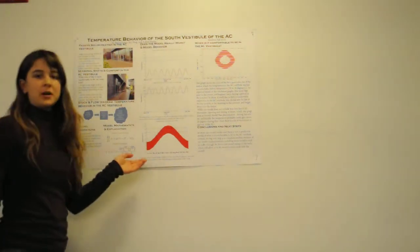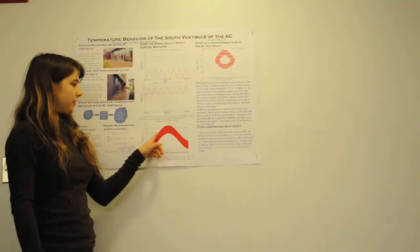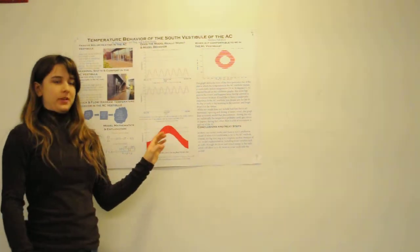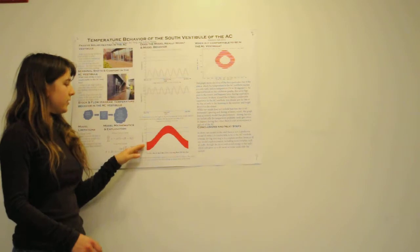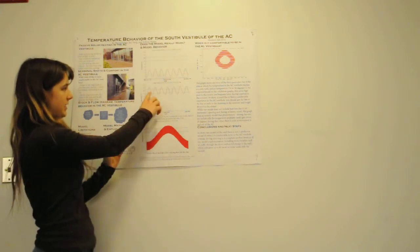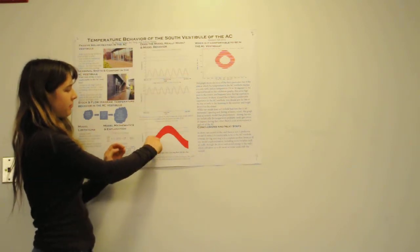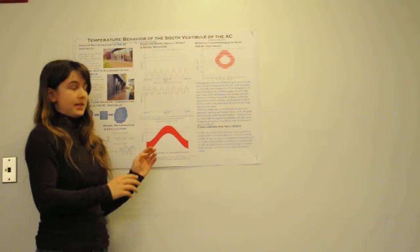So this is what our model ended up looking like. You can see that we have a general trend over the course of the year, where it gets hotter during the summer and cooler during the winter. But then also, you can't really see in this graph, but you can see here, that there are a bunch of little sine waves within this, which represent individual days of the year.